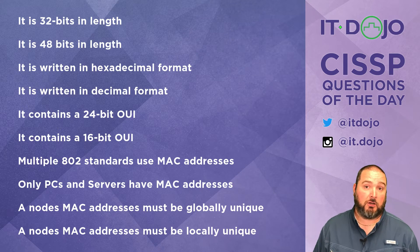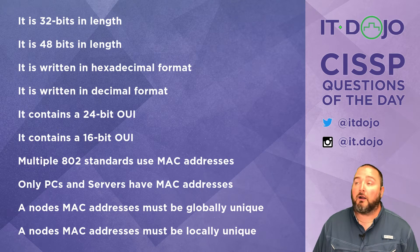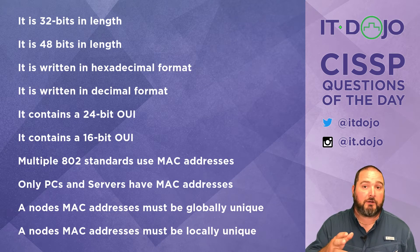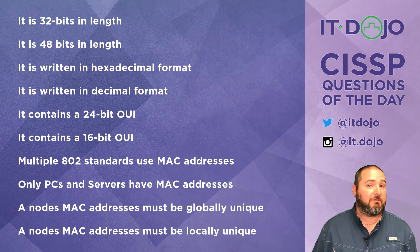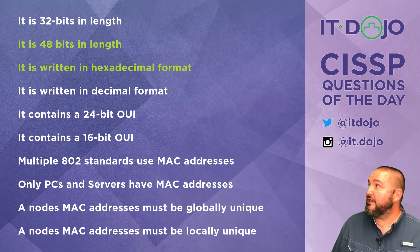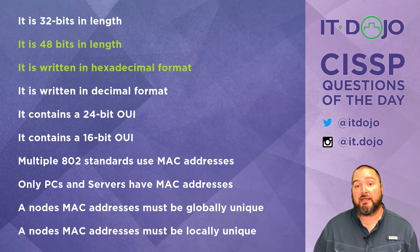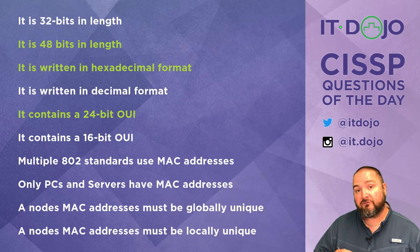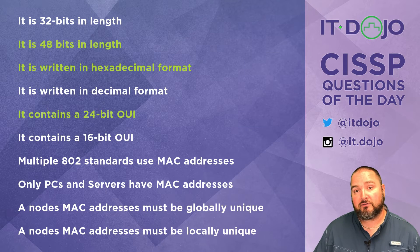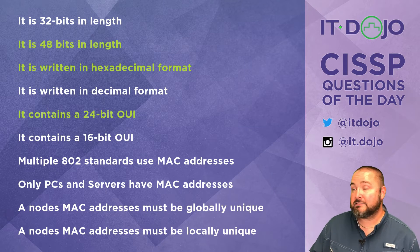First one — MAC addresses are 48 bits in length. MAC addresses are also expressed in hexadecimal. All 48-bit MAC addresses contain a 24-bit OUI — the first 24 bits, or the first six hexadecimal characters, are the organizationally unique identifier.